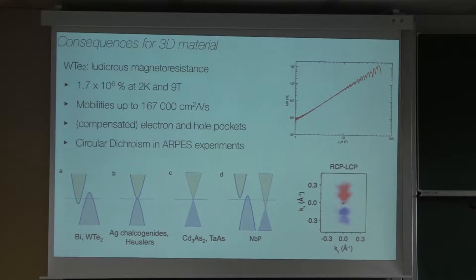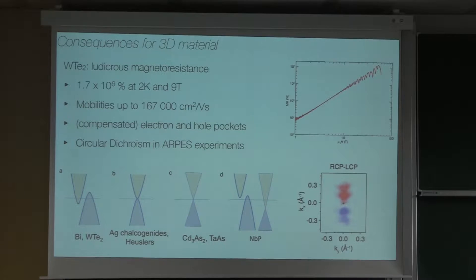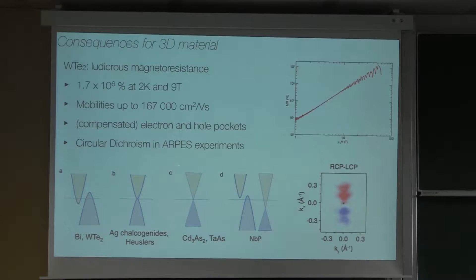When WTe₂ first came out, people said we knew bismuth before, but nothing much else. Then it became obvious that there are many materials showing really insane magnetoresistances, and also extremely high mobilities for just bulk crystals grown in an oven — conductivities in the nano-ohm centimeter range. If you look at all these band structures, they don't have too much in common. Cd₃As₂ and TaAs have Weyl or Dirac states with linear dispersion. NbP has Weyl but also electron-hole pockets. Bismuth and WTe₂ only have electron-hole pockets. How does this all fit together?